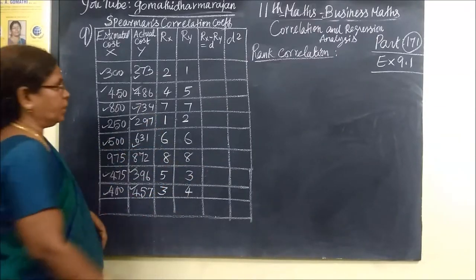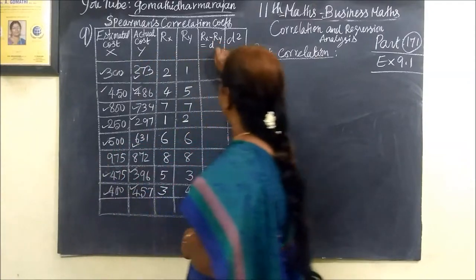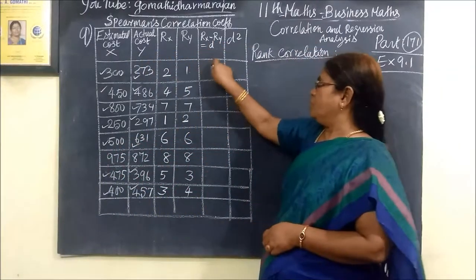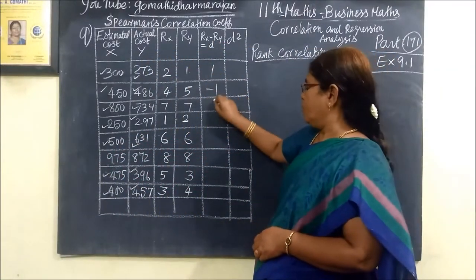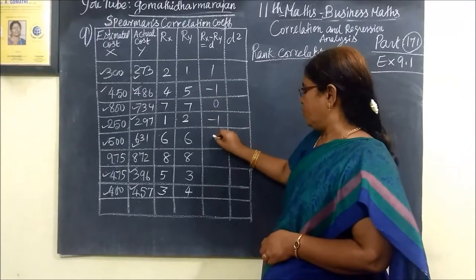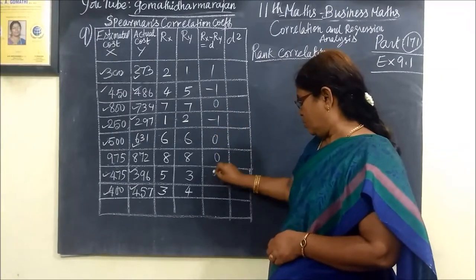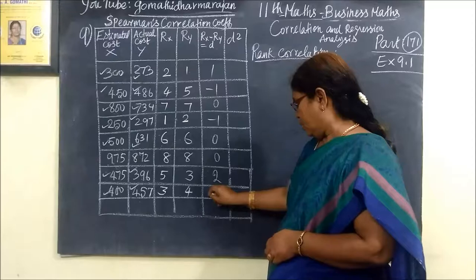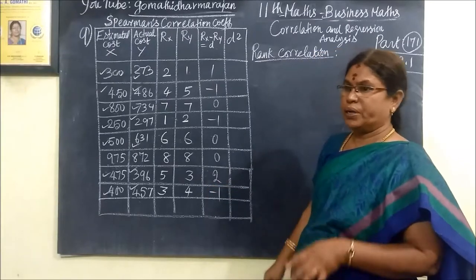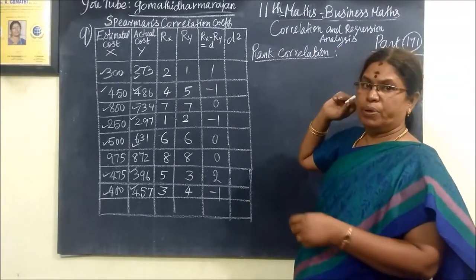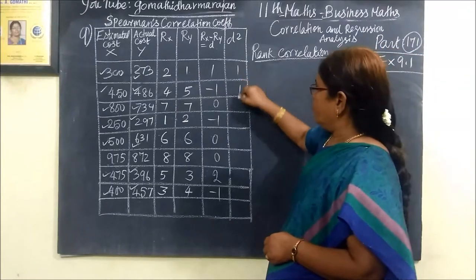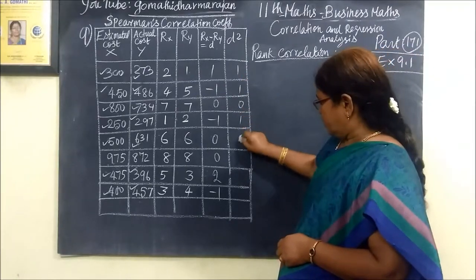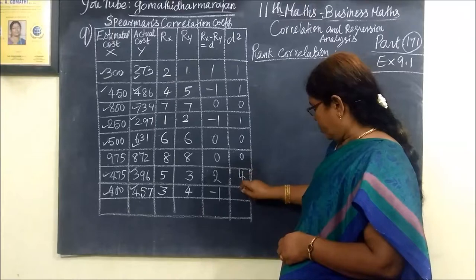So 8 is the number of characters. So D is equal to your difference. 1 minus 1 is 0. Minus 1, 0, 0, 2. Then minus 1. Greater number sign is 4. 1 minus 1. So 1, 0, 1, 0, 0, 4, 1.